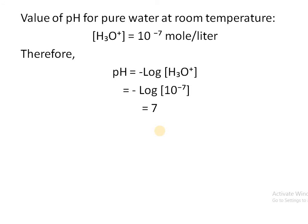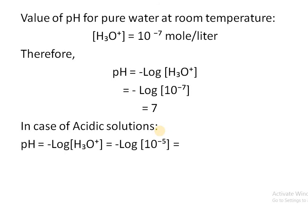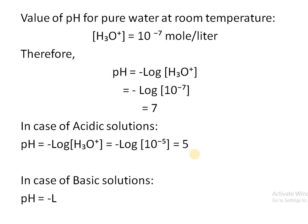For an acidic solution, the pH value is less than 7. For example, with a hydronium ion concentration of 10 raised to power minus 5, the pH will be 5. Similarly, for a basic solution, the hydronium ion concentration will be a greater negative power, such as 10 raised to power minus 11, giving a pH of 11.